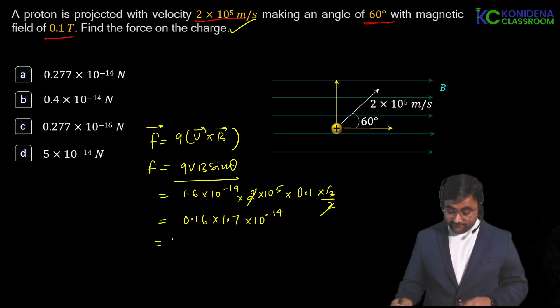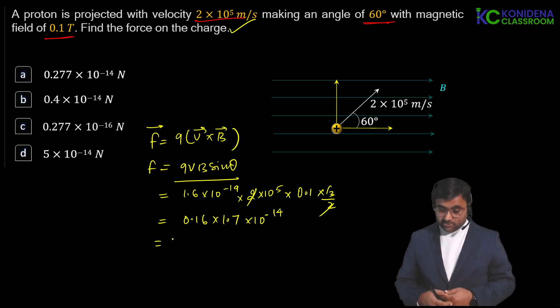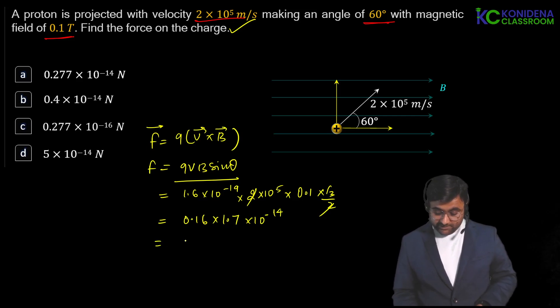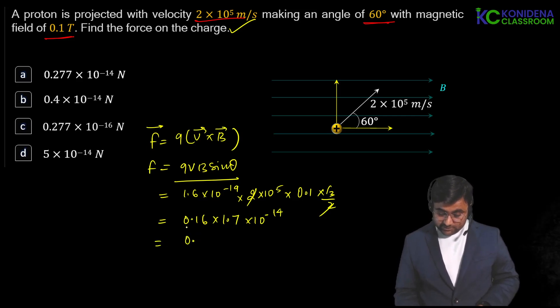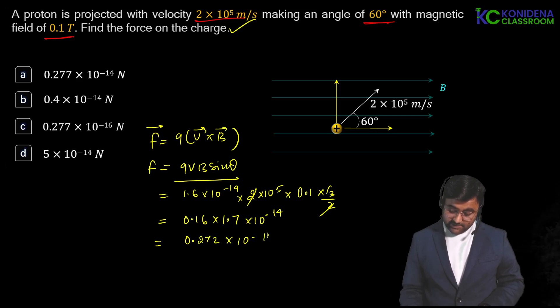If you solve it ahead, so it is very close to the first option. If you multiply this, you will get 0.272 cross 10 to the power minus 14 Newton.